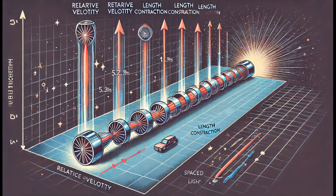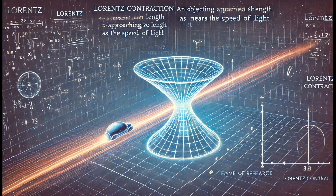It shows that the dimensions of objects are not absolute, but depend on the observer's state of motion. As the relative velocity approaches the speed of light, length contraction becomes more pronounced, eventually leading to the theoretical scenario where an object moving at the speed of light would appear to have zero length. Lorentz contraction has profound implications for our understanding of space and time.